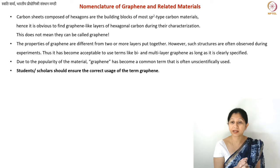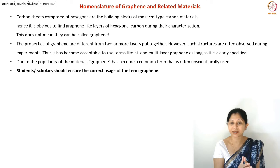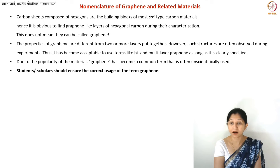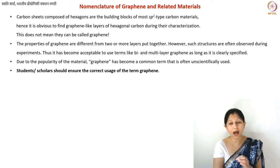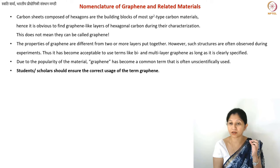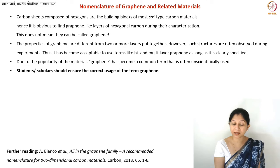Graphene has become a very popular material, which is attributed to the confusion of nomenclature. For research scholars and students, you should use the term graphene carefully — judge it for yourself what is correct and follow the recommendations. There have been several articles on this. You always have the IUPAC gold book for reference. Even if highly cited publications have used wrong terminology, it is your responsibility to find out what is correct.